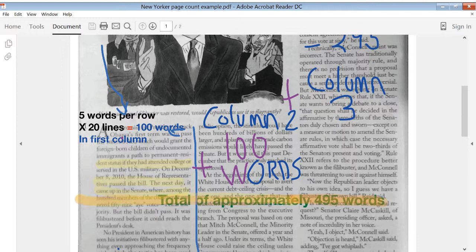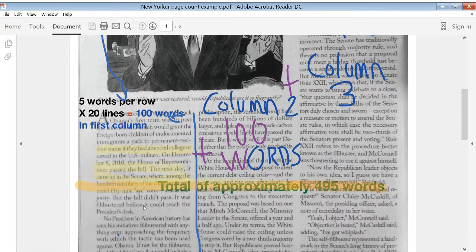So let's say this is about five words per row. Now, if your column were a little bit wider, it would have six or seven words per row. And some of them may have different numbers of words per row, depending on varying widths. This particular one, if I, let's say I count from filibustered before it could reach the.